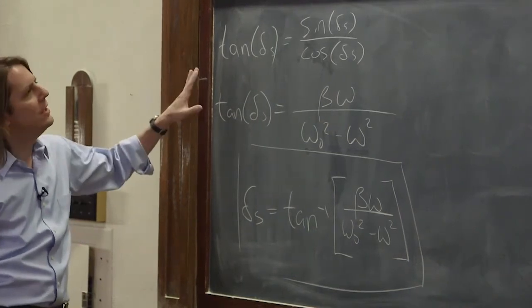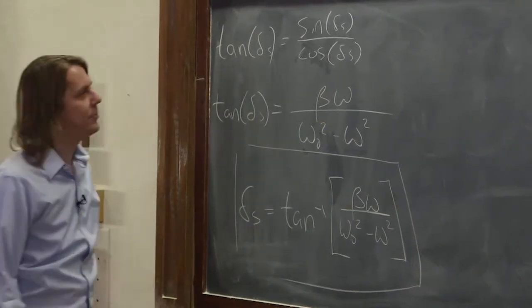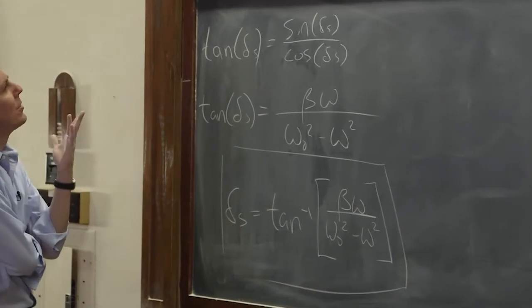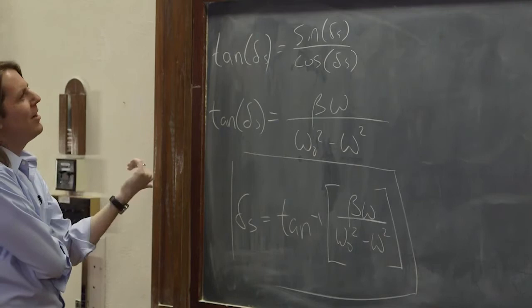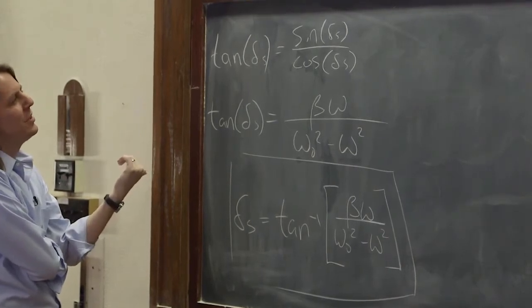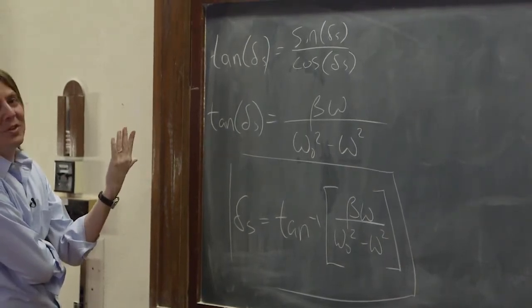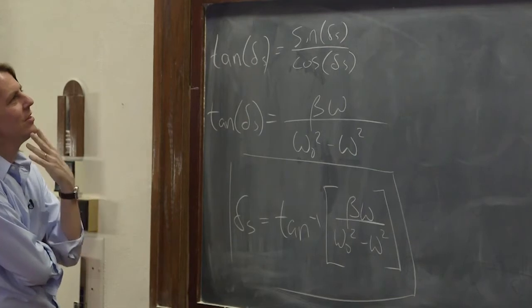So now we also need the steady state amplitude. So we look up here. It's not going to be easy because, again, we can't do it algebraically. We now have delta s. The steady state phase, we can plug it in. But then you have cosines of inverse tangents. And that's not going to, it makes a mess.